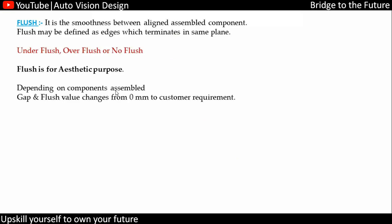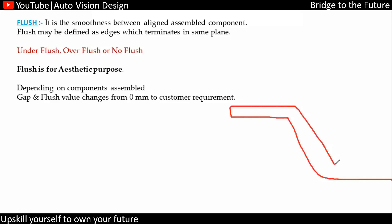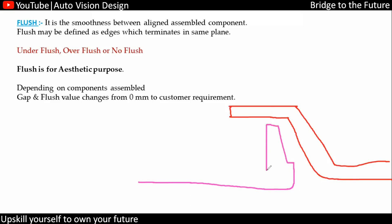Similar to the gap, we're going to look at the flush. Flush is nothing but the surface level difference between two adjacent components in Class A. So suppose, for convenience, here we're going to have one part, and then we need to have another part, something like this.